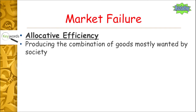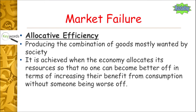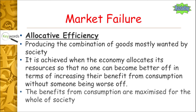The proper official definition for allocative efficiency — the key word for today — is producing the combination of goods most wanted by society. It is achieved when the economy allocates resources so that no one can become better off in terms of increasing the benefit from consumption without someone being worse off. The benefits of consumption are maximised for the whole of society. This is when marginal benefit equals marginal cost.